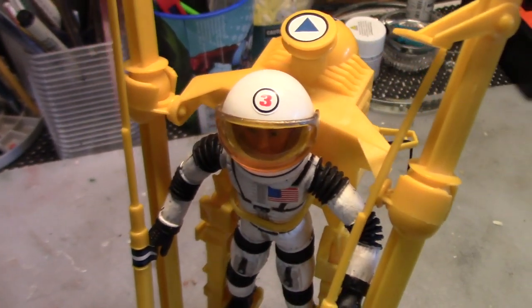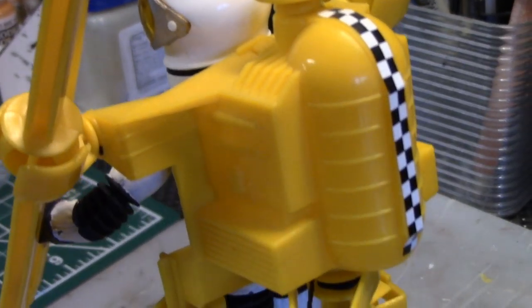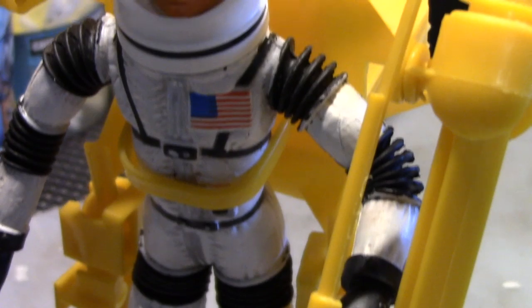The other thing that this reminded me of was an action figure that we used to play with as a kid called Major Matt Mason. This is an actual Major Matt Mason action figure that I have in my collection. I found it about 10 years ago on eBay. I got it for a good price. It was in great condition, and it just brought back a lot of nostalgia for me.